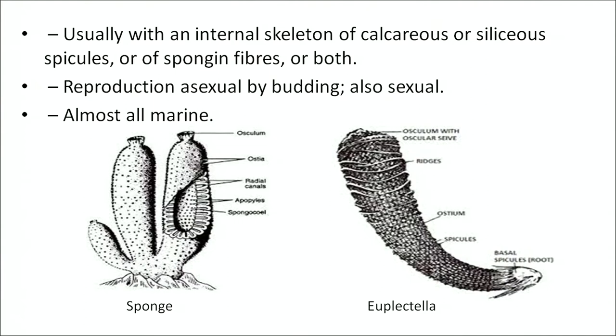Reproduction is asexual, that is by budding. When sexual reproduction takes place, it occurs in almost all marine animals. Examples are Sycon, Euplectella, Euspongia, etc.